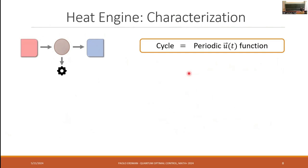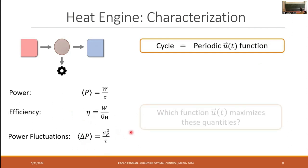So let's assume now that we have a cycle, so we have some periodic driving u of t, our controls. How do we characterize the performance of an engine? We can look at the power, which is simply work over time. We can look at the efficiency, which is the work we extract divided by the input heat, or equivalently, we could think of reducing the entropy production. And we could also look at the power fluctuation. Since we're a nanoscale system, even the output power can fluctuate, and we can quantify it in terms of the variance of the work distribution divided by time. And what we want to answer is, which functions u of t, which cycles maximize these quantities?